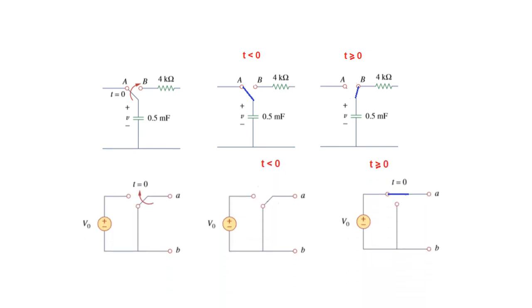And this is opposite of that. Now this is moving from position b to a at t is equal to 0. That means before t is equal to 0, this is at position b, and after t greater than 0, this has moved to position a.